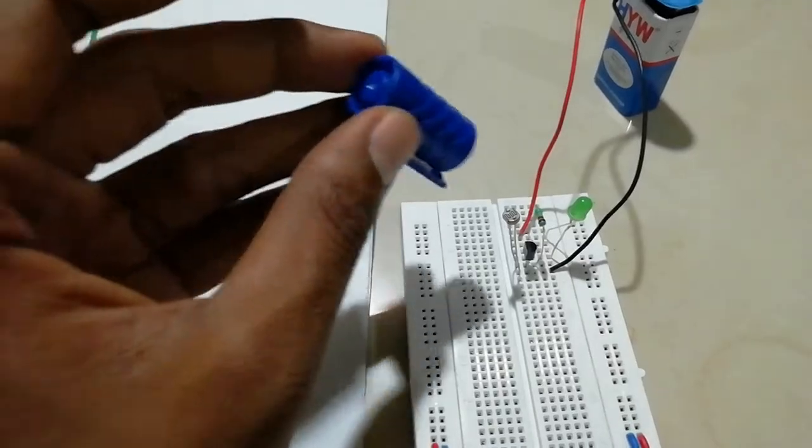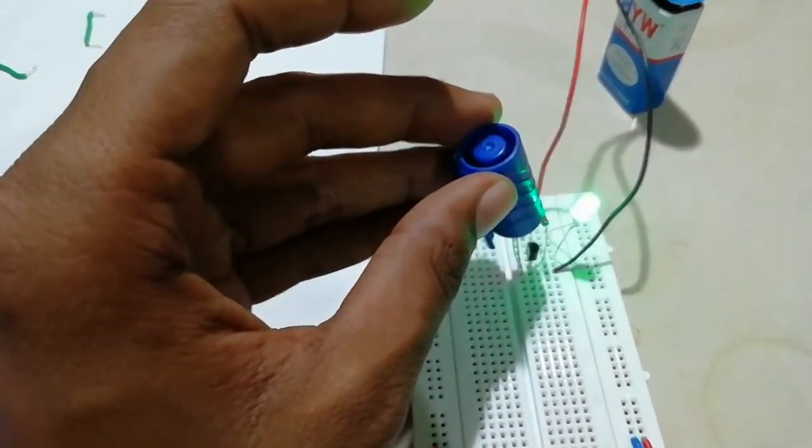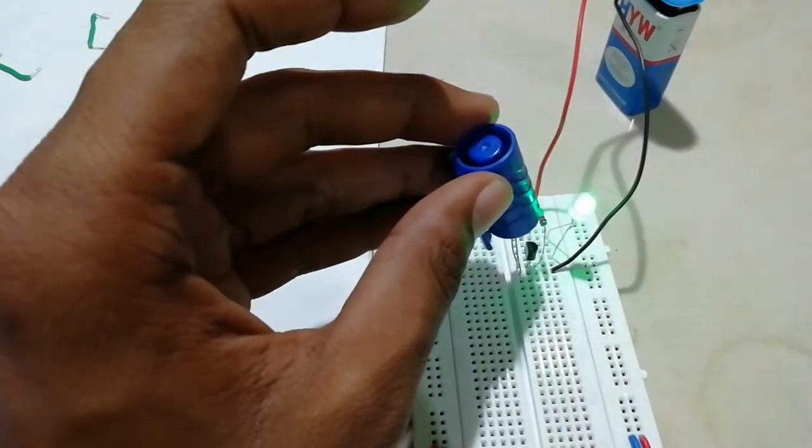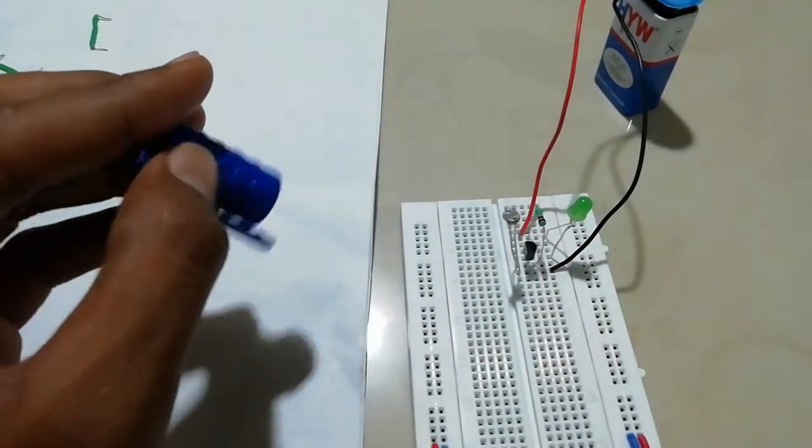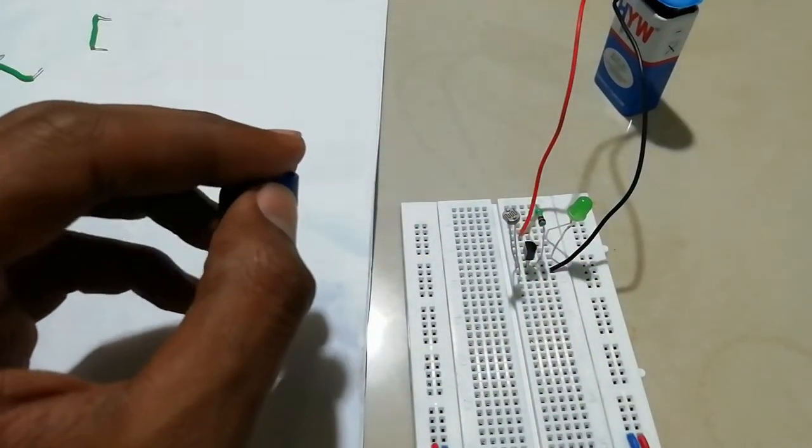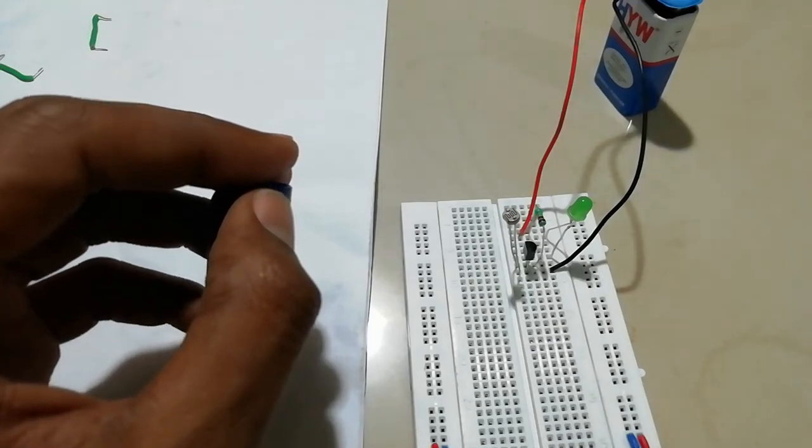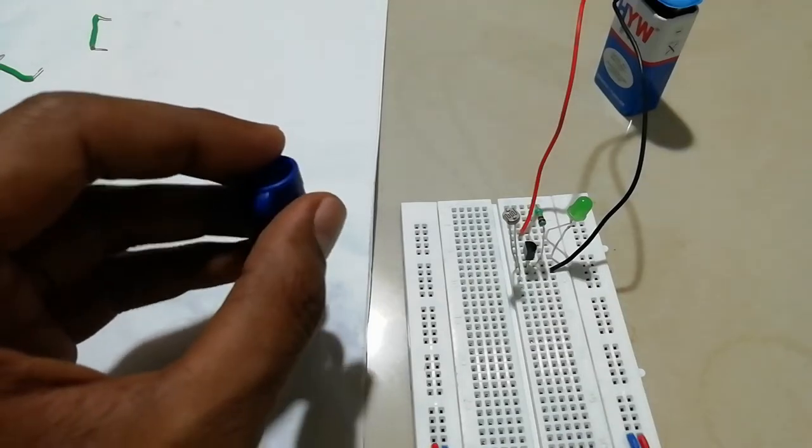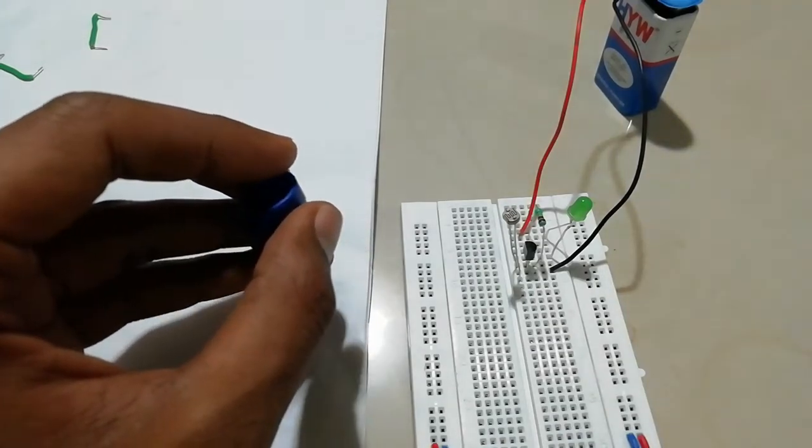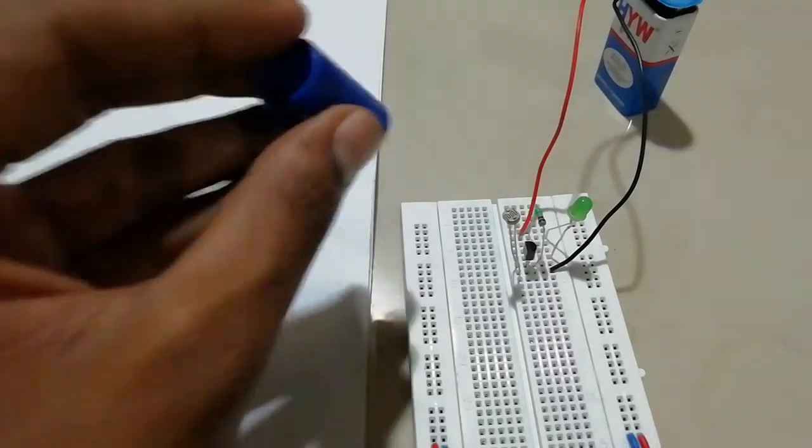So you are observing that when I am making it dark, the LED is glowing. If you want the theory and the circuit diagram for the same, you can visit the description. There a link is given for circuit and complete theory and working principle. You can visit and read that.